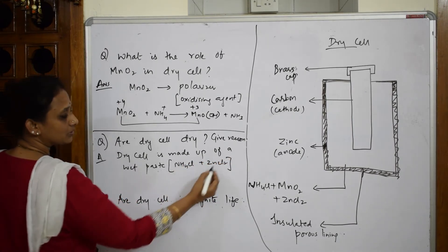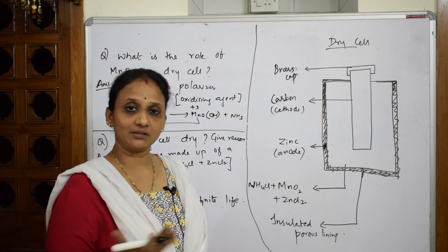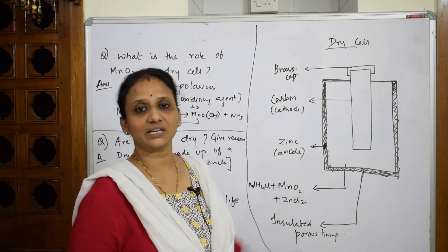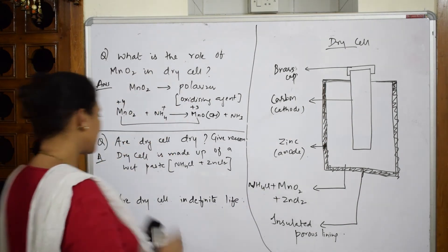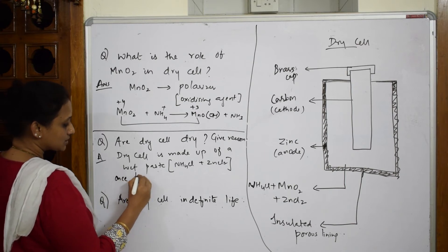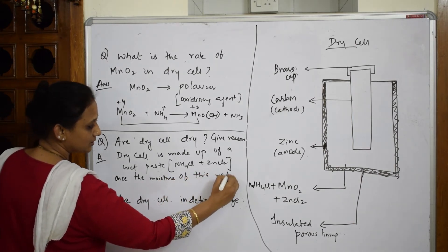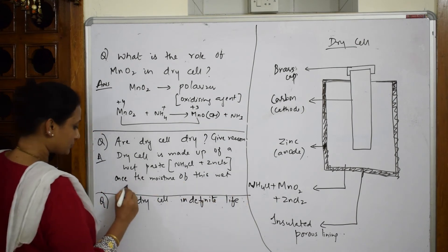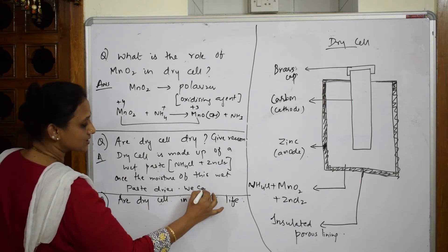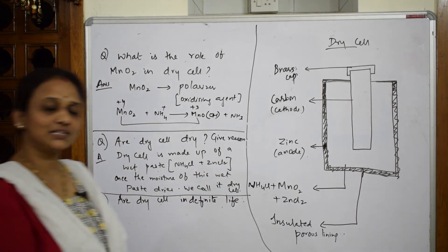a wet paste that is a combination of ammonium chloride and zinc chloride. Now what will happen? Till the ammonium chloride and zinc chloride are wet in nature or moist in nature, this will work. Once they dry up, it will not work anymore. That is why we call it as dry cell. What are we trying to say? It has a wet paste that is a combination of ammonium chloride and zinc chloride. Once the moisture of this wet paste dries, we call it as dry cell.